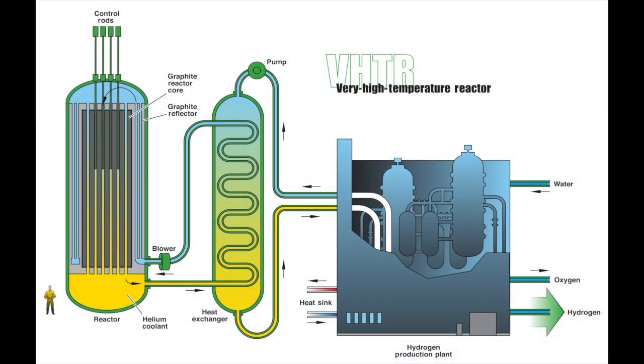Other Generation IV reactors currently under development include the Very High Temperature Reactor or VHTR, a thermal once-through design using either gas or molten salt coolant and a two-stage Brayton gas turbine generation cycle. The fuel consists of either PBR-style graphite pebbles or prismatic blocks integrated into the core itself. As with PBRs and MSRs, the chief advantage lies in achieving high turbine inlet temperatures resulting in high thermal conversion efficiency.